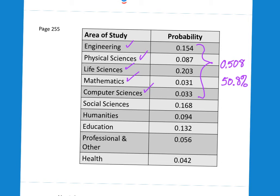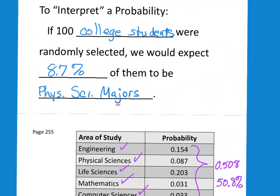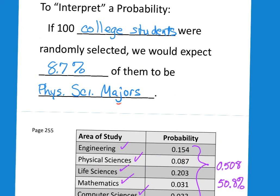So going back, 50.8%, remember that, going back to our language that we used before. If 100 college students were randomly selected, we would expect that 50.8% of them would be STEM majors.